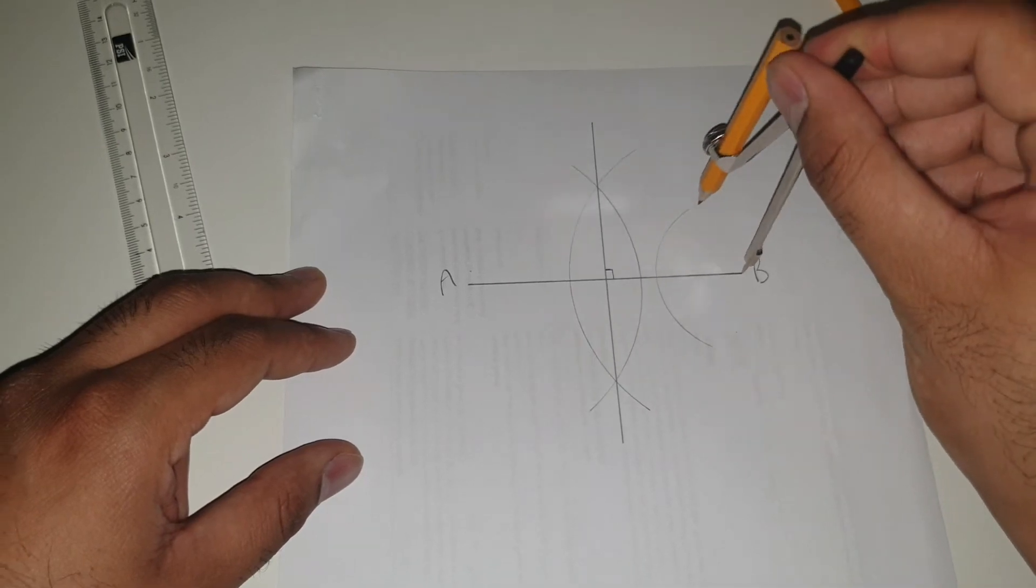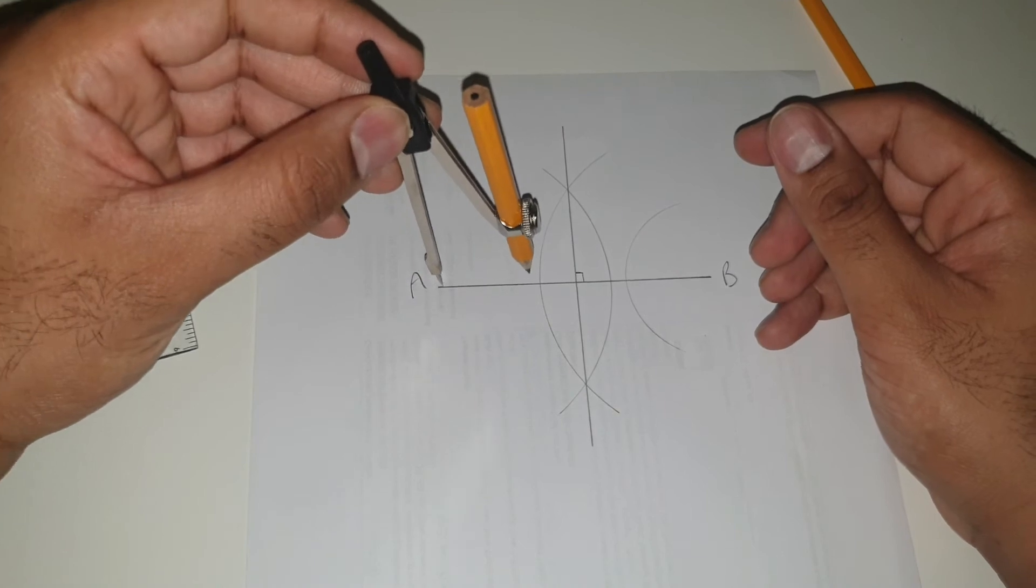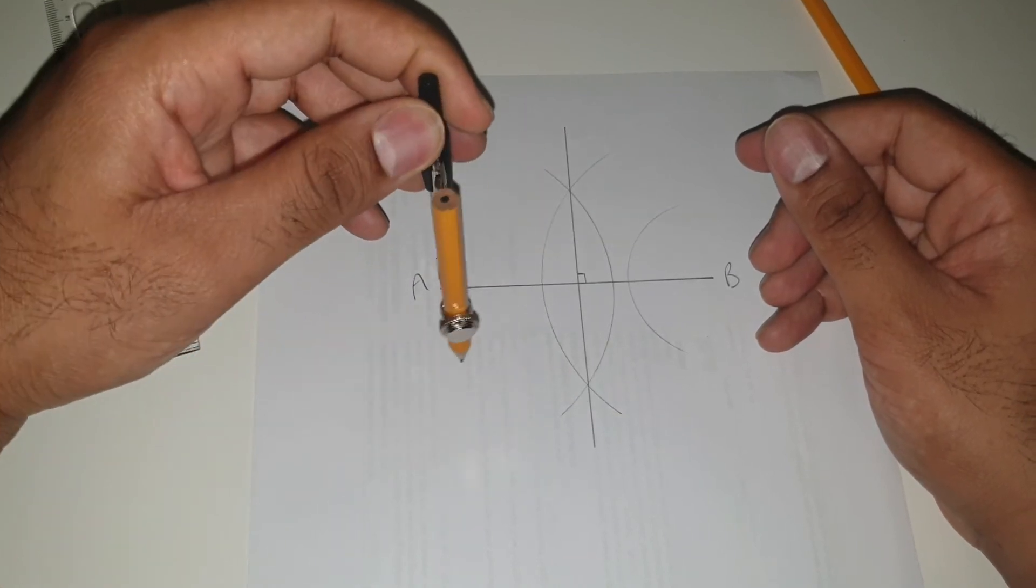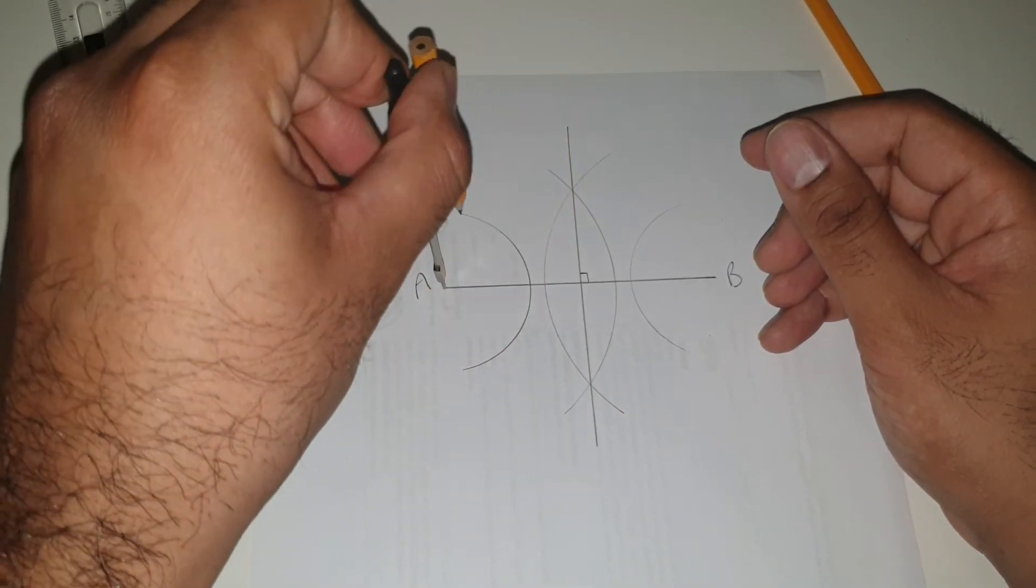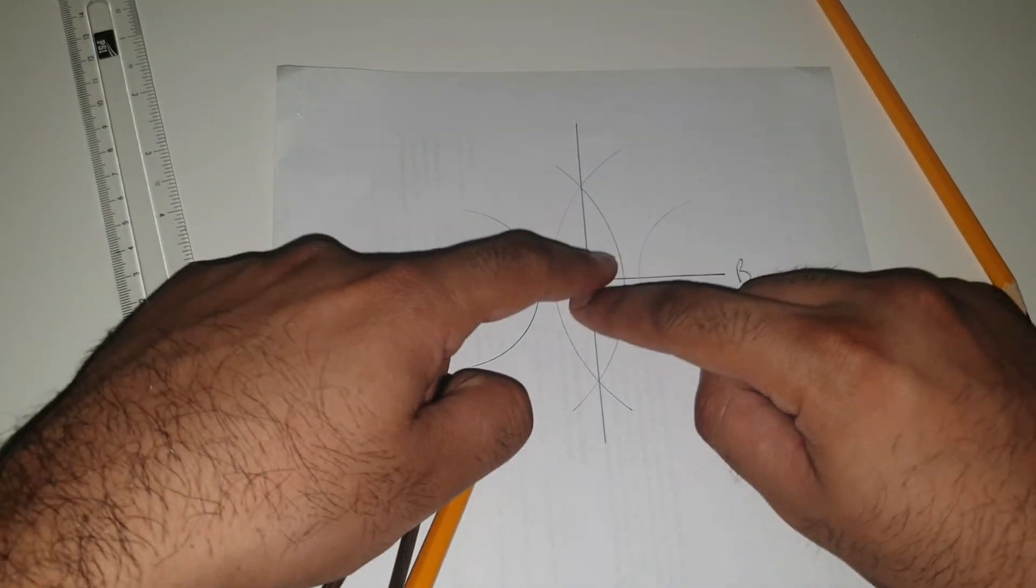You're going to draw your semicircle or a third of a circle there. And then you're going to do the same thing again over here. And as you can see, the two parts of the circles don't cross over.